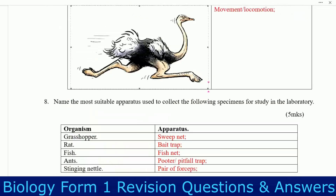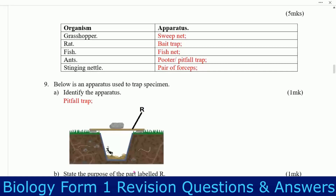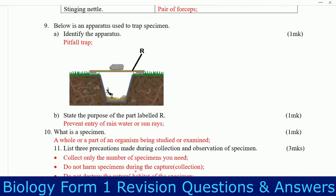Question eight: name the most suitable apparatus used to collect the following specimens for study in the laboratory. Grasshopper — use a sweep net. Rat — use a belt trap. Fish — use a fish net. Ant — use a pooter or pitfall trap.